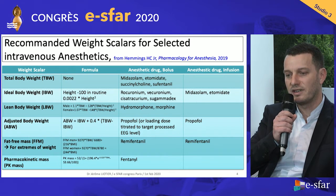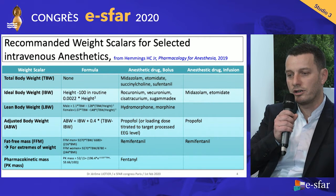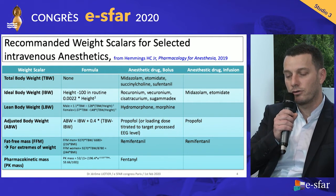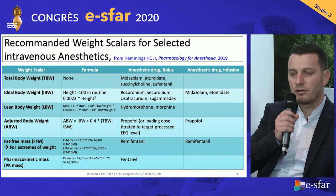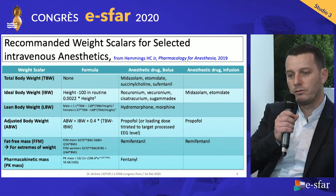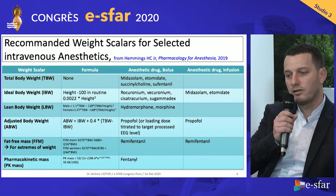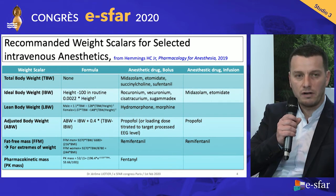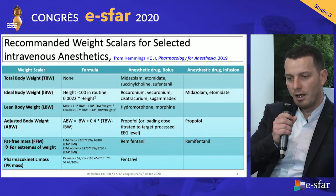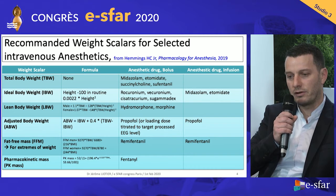If you want to use a simpler formula, it's height minus 100 in routine, and it's used for neuromuscular blocking agents like rocuronium, vecuronium, cisatracurium, and sugammadex. Many clinicians use ideal body weight for propofol, but it's recommended to use lean body weight with this formula, or titrate the loading dose to target processed EEG level if you have the bispectral index. If you use remifentanil not in TCI, you have to use fat-free mass with a very complex formula, and pharmacokinetic mass for fentanyl.